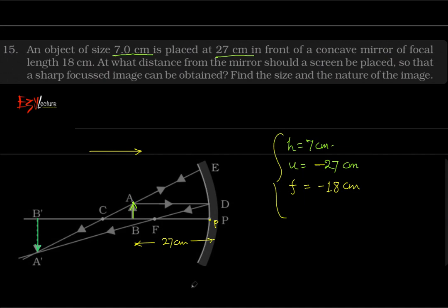These three informations are given in the question. Now, at what distance from the mirror should a screen be placed so that a sharp focused image can be obtained? So you need to find the image distance, where the screen should be placed.